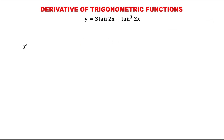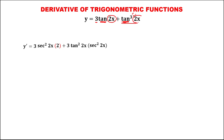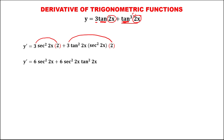For this given, y prime equals — bring down this constant, then times the derivative of tangent, which is secant squared, times the derivative of two x, that's two — then plus — using the power formula, bring down the exponent, so this becomes tangent to the power two of two x, then times the derivative of tangent, that's secant squared, times the derivative of two x, that's two. To simplify: three times two is six, times secant squared two x, and this three times two is six, times secant squared two x times tangent squared two x.